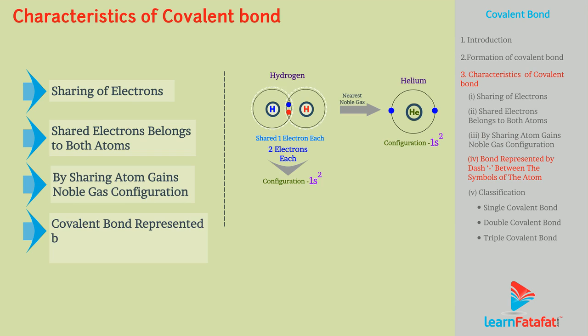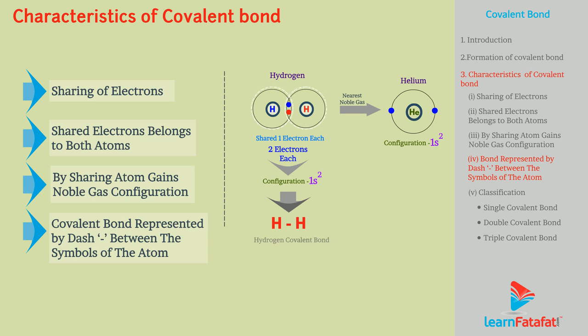The bond formed by sharing of electrons is represented by a dash between the symbols of the atoms. For example, H-H or HH.